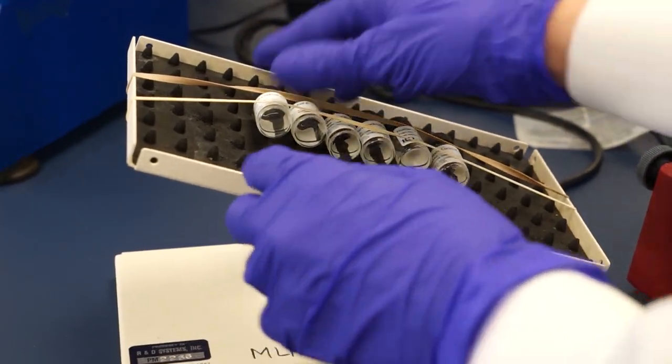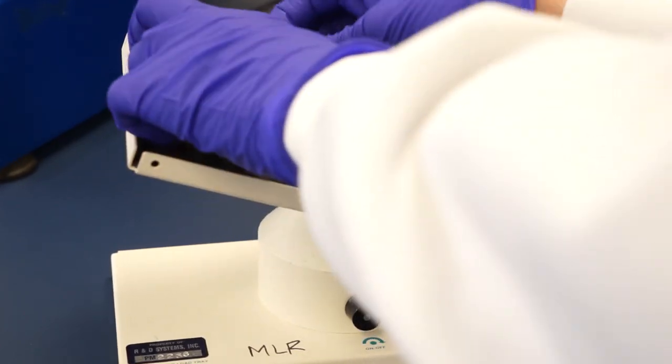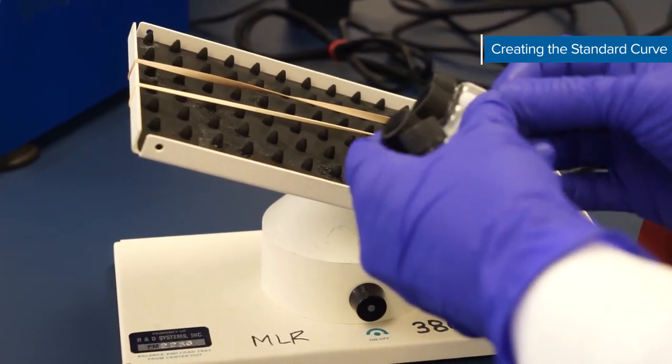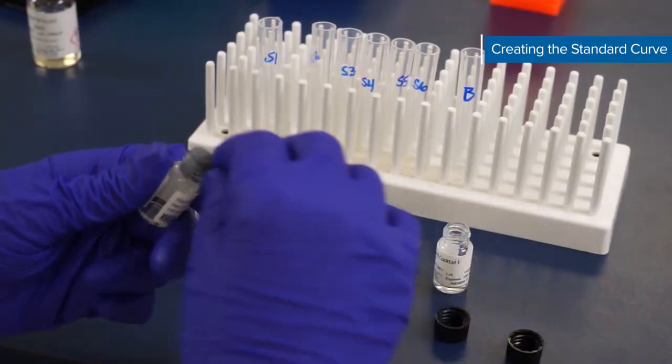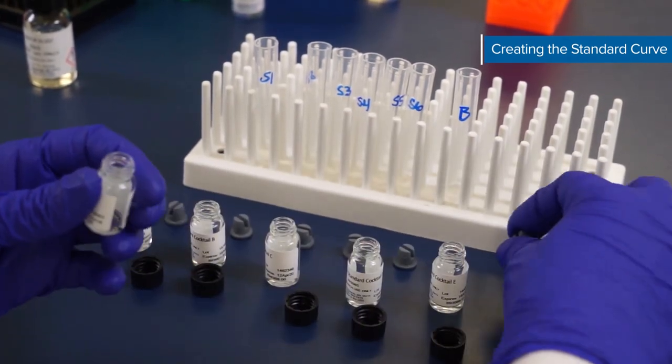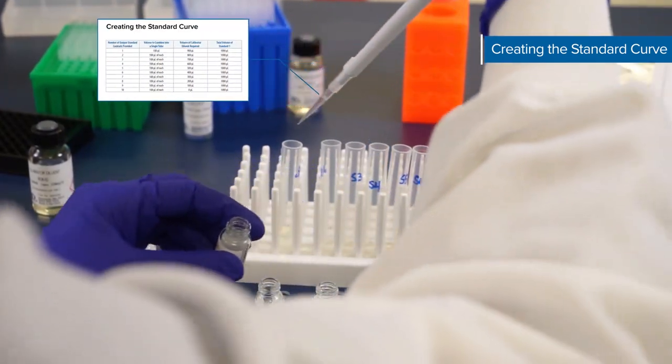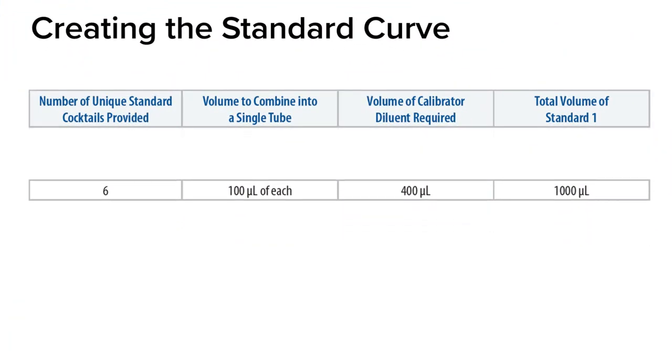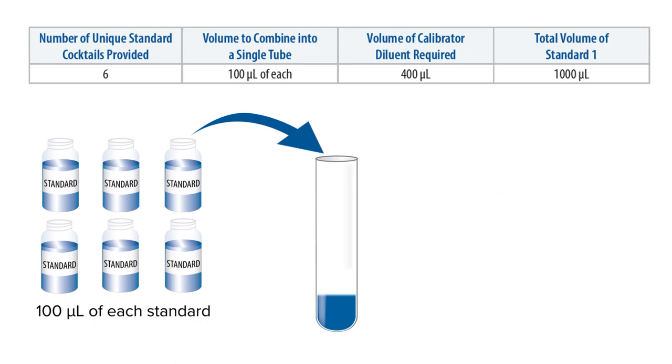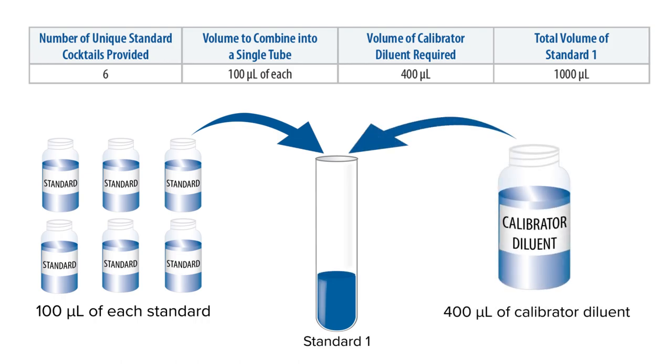About 15 minutes should have passed since you reconstituted your standard cocktail. Once reconstituted, each standard cocktail is a 10x concentrate. Use polypropylene tubes to combine the unique standard cocktails with the calibrator diluent according to your kit booklet to create standard one. In this video we're using six unique standard cocktails, so we'll add 100 microliters of each standard to 400 microliters of calibrator diluent to make a total volume of 1000 microliters. Vortex gently to mix.